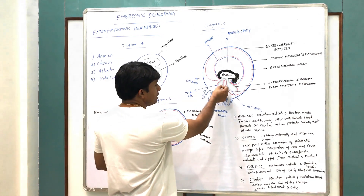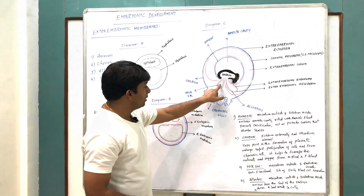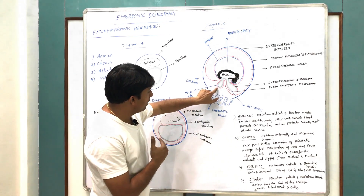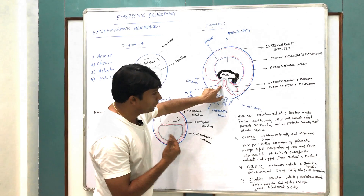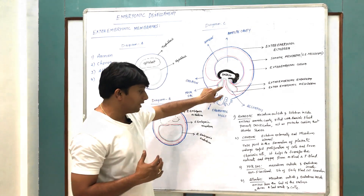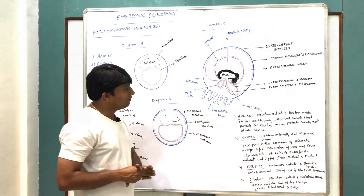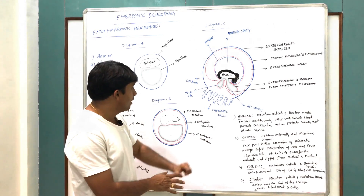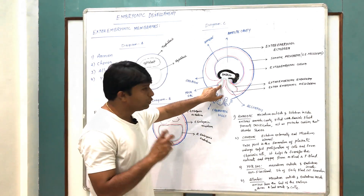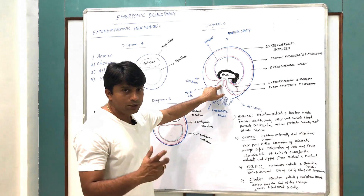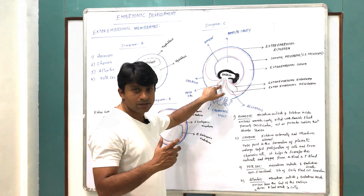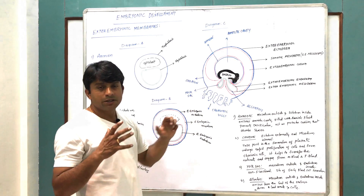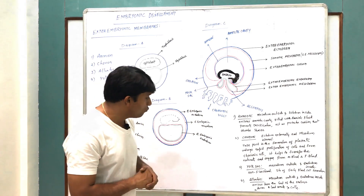The yolk sac consists of mesoderm to the outside and endoderm to the inside. The yolk sac is not very well developed in humans — it is non-functional and does not have any nutritive value in case of mammals. However, in the case of reptiles and birds, the yolk sac stores nutrients.